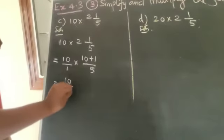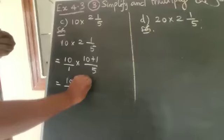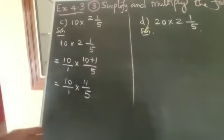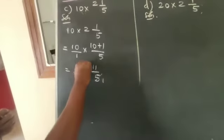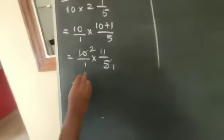Cancel the numerator and denominator: 5 into 5 is 1, 5 into 10 is 2. Multiply the numerators: 2 × 11 = 22.